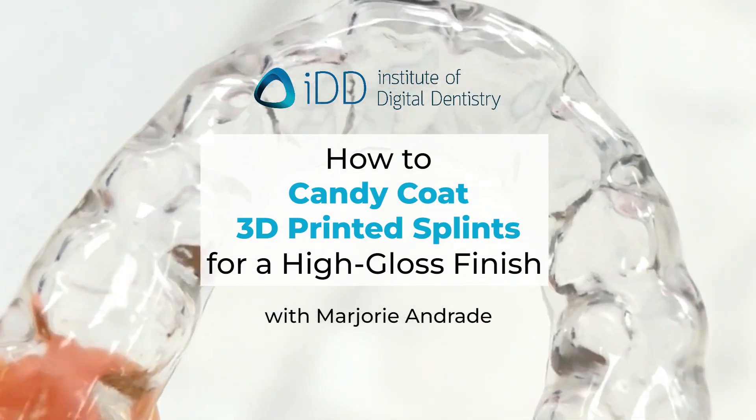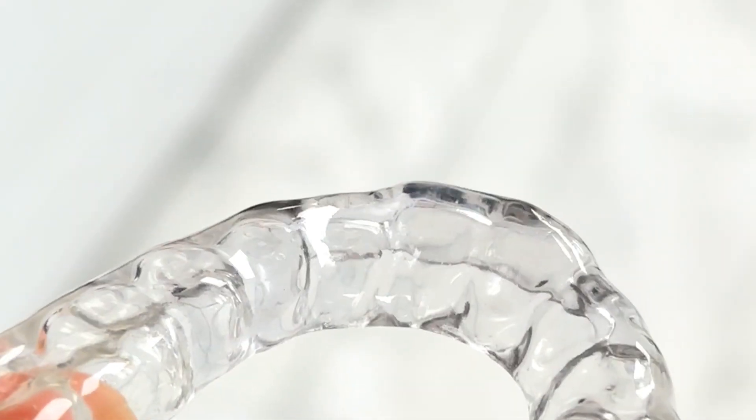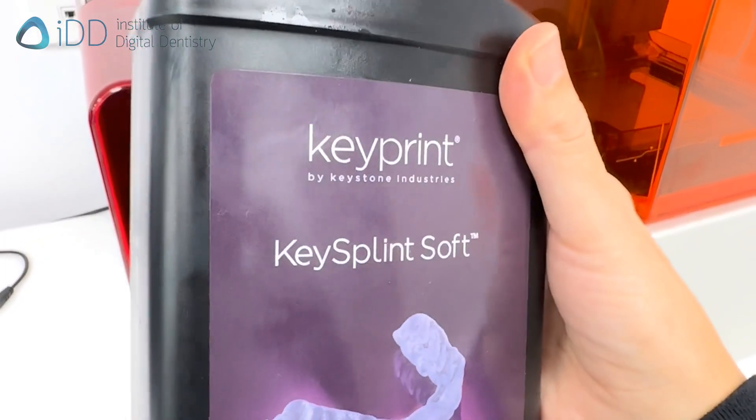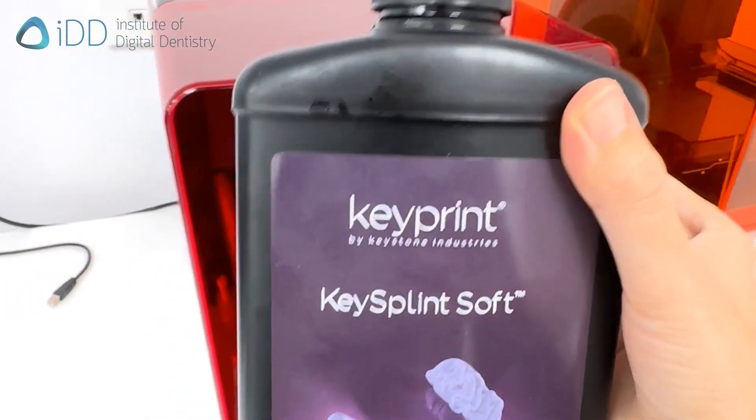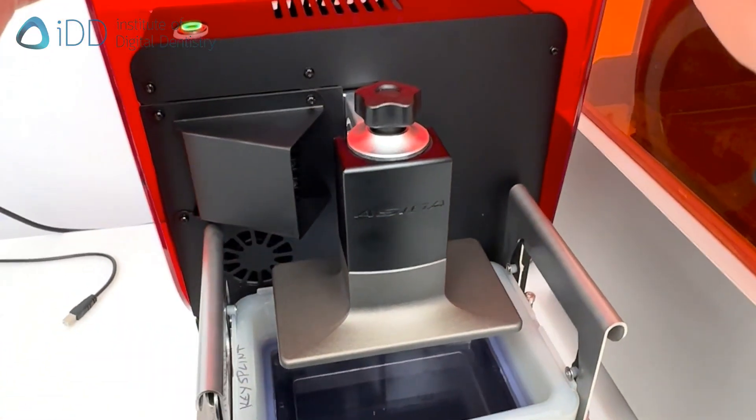Here's a video to show you how to achieve a glossy surface like this using the candy coating technique. In this demonstration, I'll use the Resin KeySplint Soft and the Asiga Max 3D Printer, but this technique can be used with any resin.